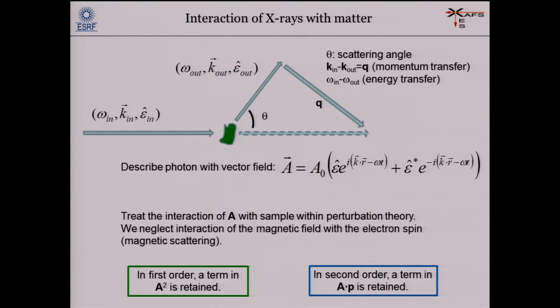Electromagnetic radiation — I think this was already addressed this morning. We do photon-in, photon-out spectroscopy, so we look at scattering of photons. A photon comes in with energy, k-vector, and polarization, and is scattered at scattering angle theta. The vector q is the momentum transfer — the difference between incoming and outgoing k-vectors. The difference between the two energies is the energy transfer. The photon is described with a vector field, and there are two important terms: the A-squared term and the p-dot-A term.